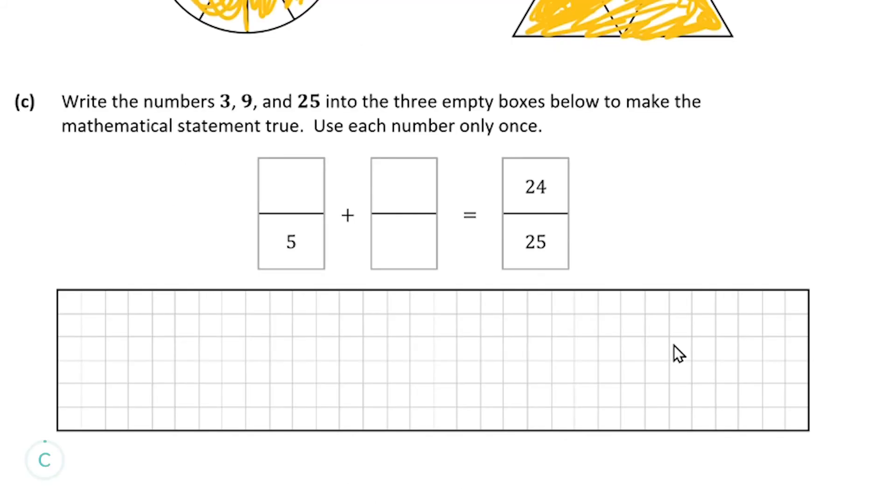And moving on to our final part, part c, we're told to write the numbers 3, 9, and 25 into the three empty boxes below to make our mathematical statement true. So we have some fraction here plus another fraction here which is going to be equal to our fraction 24 divided by 25.